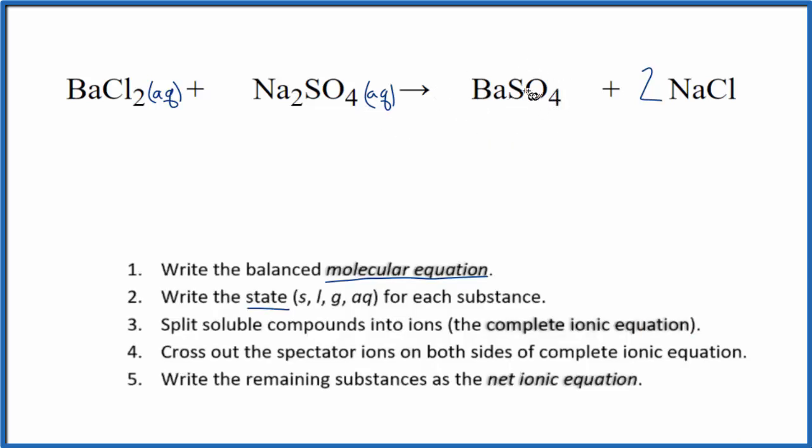If we look up barium sulfate on a solubility table, we'll see that this is insoluble, it won't dissolve. Because of that, it's a precipitate in this reaction, it falls to the bottom of the test tube. We're going to write S for solid, because it's insoluble, it's at the bottom of the beaker as a solid.